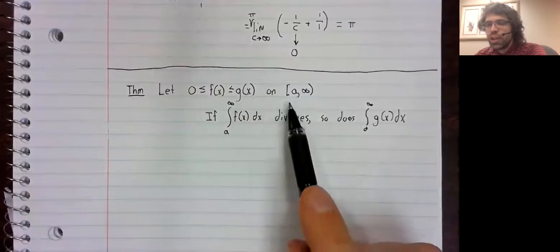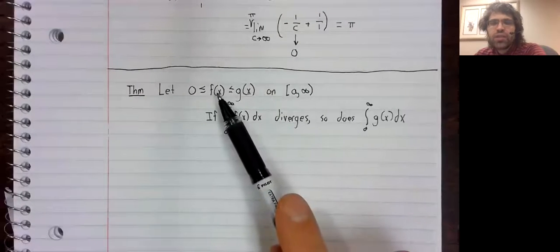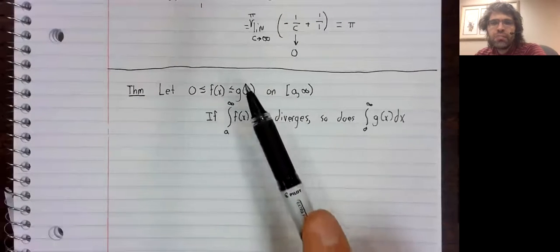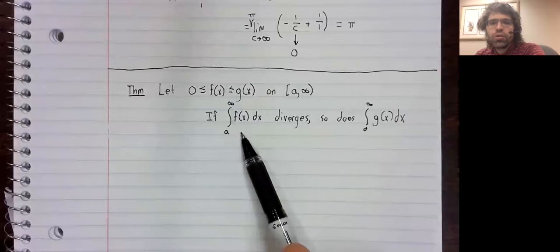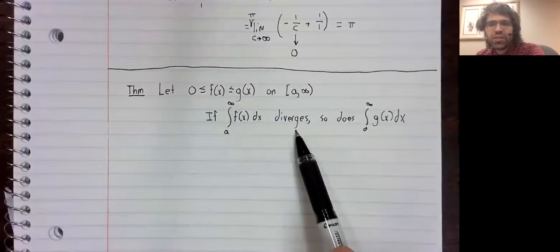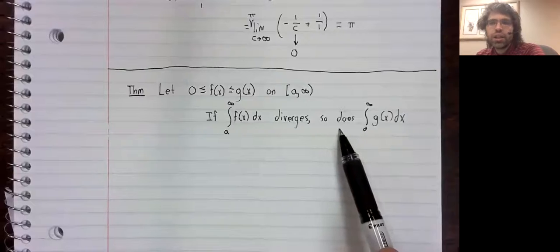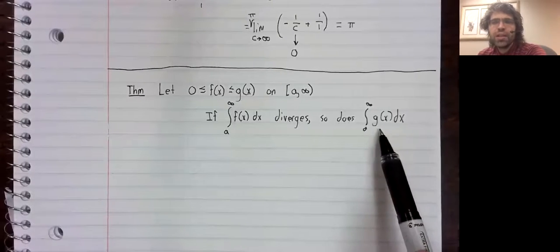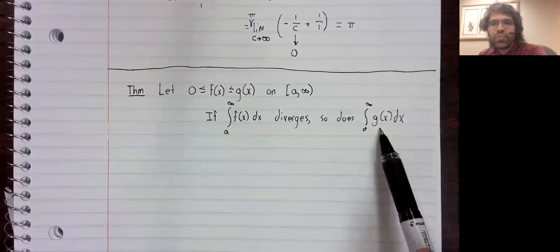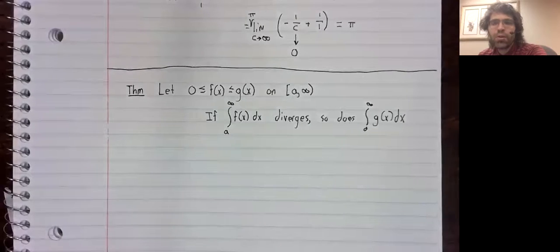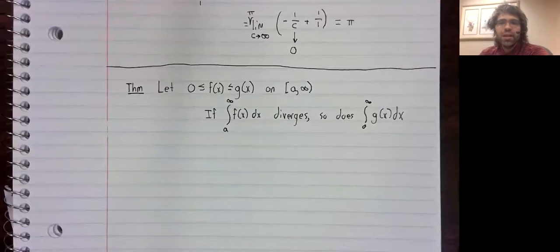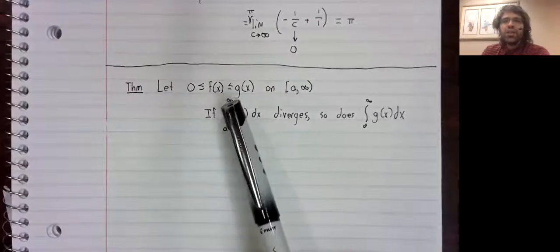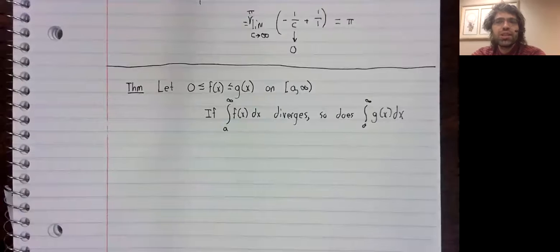Suppose you're working on some interval, and you have a smaller function and a larger function. If the area under the smaller function is infinite, then the area under the larger function is also infinite. You cannot have a finite number that's larger than infinity. And if we're willing to believe this, we have no choice but to believe the following about the surface area.